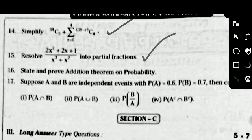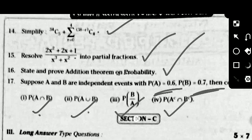Problem number 15: resolve the given fraction into partial fractions — from the partial fractions topic. Next, question 16 is the addition theorem in probability — the most important theorem from probability. Problem 17: suppose A and B are independent events with P(A) = 0.6 and P(B) = 0.7. Find: P(A ∩ B), P(A ∪ B), P(B/A), and P(Aᶜ ∩ Bᶜ). These are the four-mark questions.